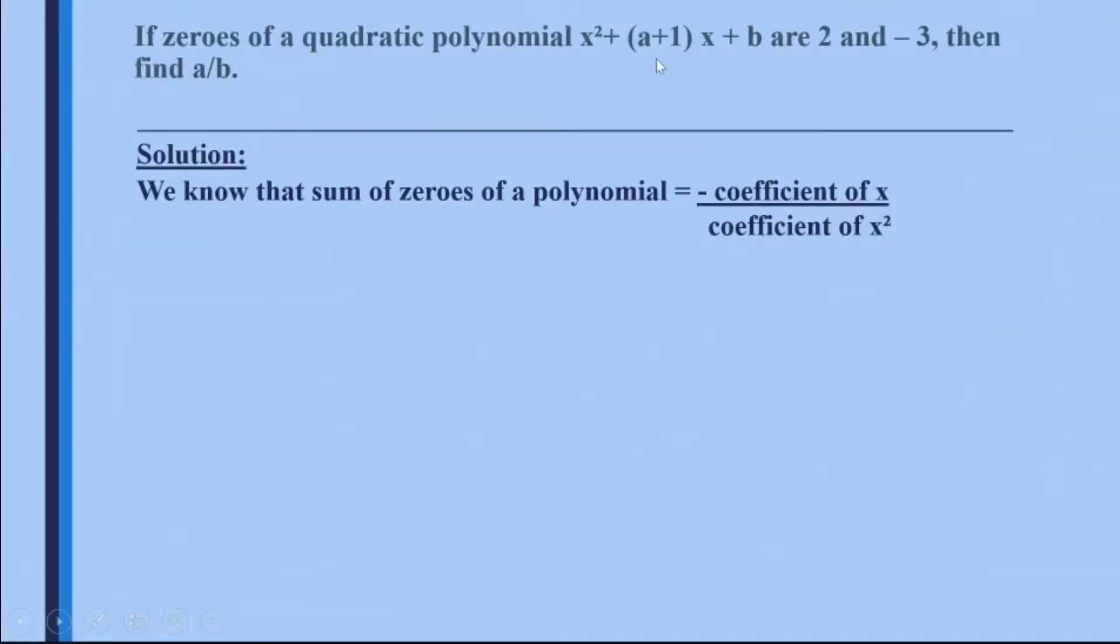So if you see here, the sum of the zeros, zeros are 2 and -3. So what will be the sum? The sum of the zeros will be 2 + (-3). That will be equal to minus the coefficient of x upon coefficient of x².